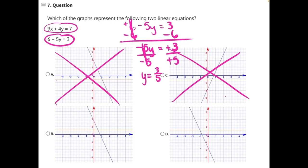To do that, we need to plug in 0 for each. Let's start by plugging in 0 for x. So we have 9 times 0 plus 4y equals 7. 9 times 0 will just give us 0. That'll go away, leaving us with 4y equals 7.